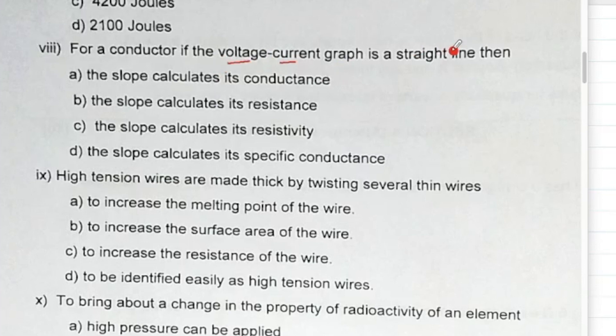Now V against I - if it is V against I, then the slope is delta V upon delta I, so that will be resistance. So conductance no, slope calculates resistance yes, resistivity no, specific conductance no. So option is B.